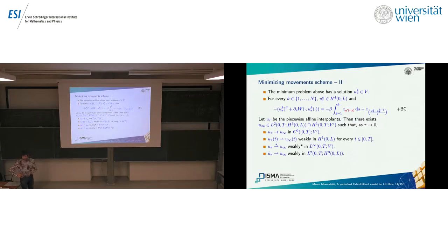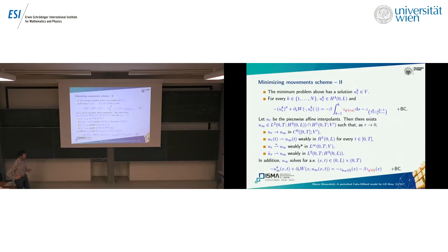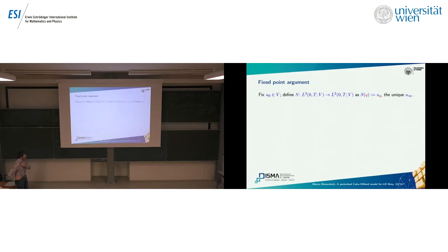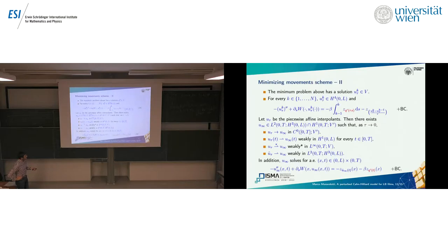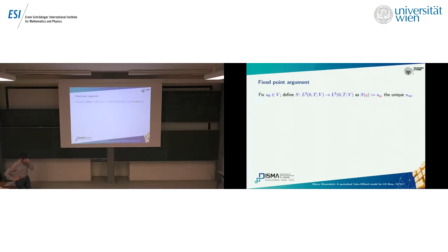The convergences are technical to prove. The limit u_∞ solves for almost every point in space-time the equation we need, together with the required boundary conditions. To show that u_∞ itself can be plugged in, we set up a fixed point argument: u_∞ is the u_q — the solution associated with this particular q — and we prove that this map S is continuous and compact, using estimates from the minimizing movement scheme and the Aubin-Simon theorem.